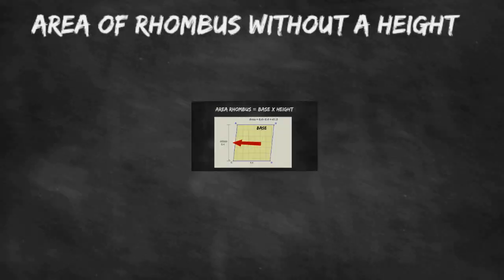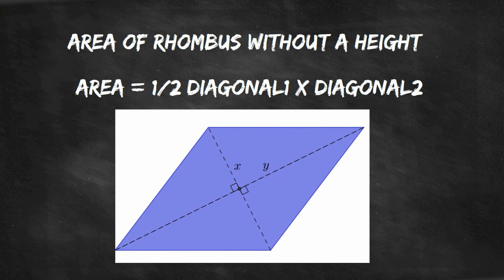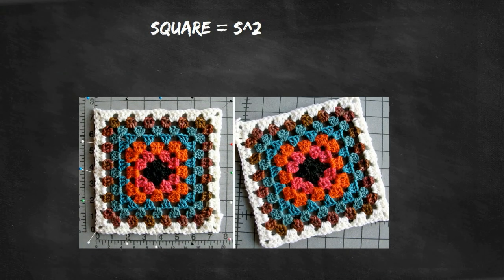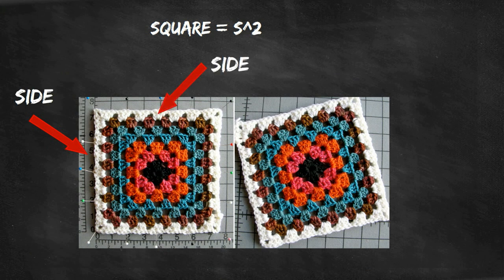If the height is not given you can use 1 half times diagonal 1 times diagonal 2. The area of a square is the side squared. The perimeter of a square equals 4 times the side.